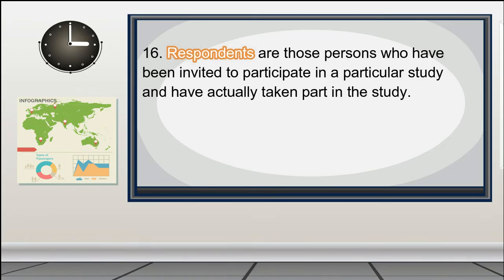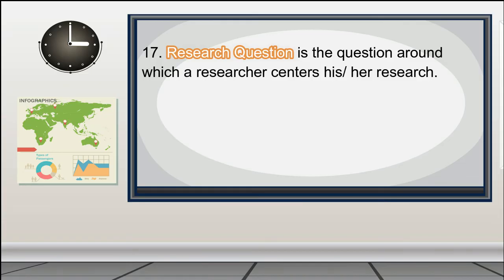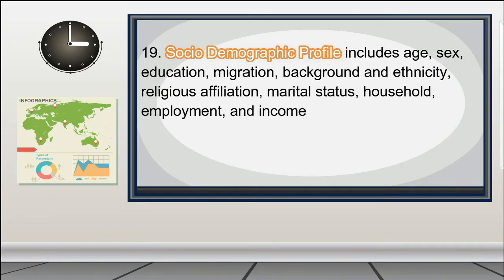15. Research topic — a subject or issue that a researcher is interested in when conducting a research. 16. Respondents — those persons who have been invited to participate in a particular study and have actually taken part in the study. 17. Research question — the question around which a researcher centers his or her research. 18. Sample — a part or subset of populations selected to participate in the research study. 19. Social demographic profile — includes age, sex, education, migration background and ethnicity, religious affiliation,